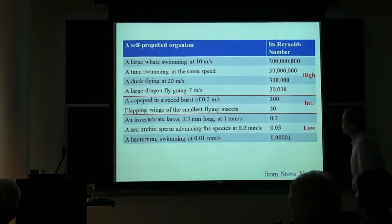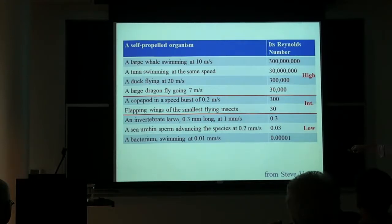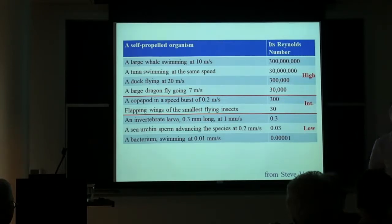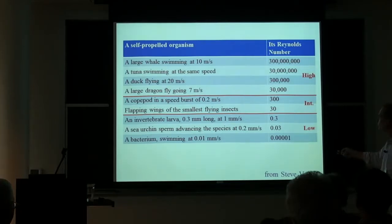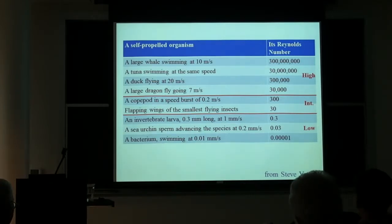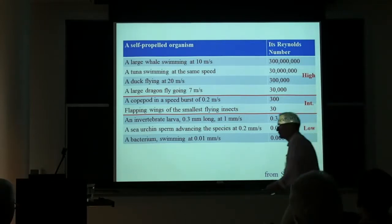From Steve Vogel's book 'Life in Moving Fluids,' we can see the range of Reynolds numbers that life on Earth experiences. A blue whale swimming at 10 m/s has a Reynolds number around 300 million; tuna around 30 million. At the low end, bacteria are at 10⁻⁵ and sea urchin sperm at 10⁻². There's also an interesting intermediate Reynolds number range, sitting between the small and large worlds, with special properties relevant to biology.